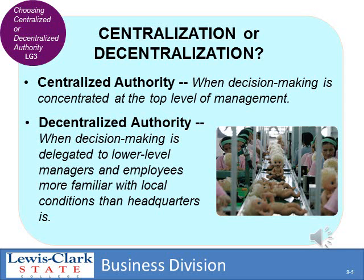As you read the chapter, you're going to learn about centralized authority and decentralized authority. In centralized authority, the decisions are made at the top — they make the rules and everybody else has to follow them. In decentralized authority, the decision making is actually given to some of the lower-level satellite offices.